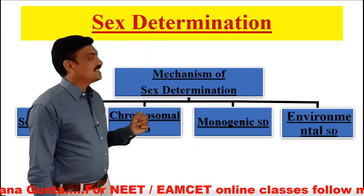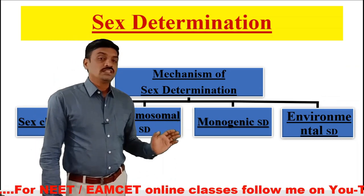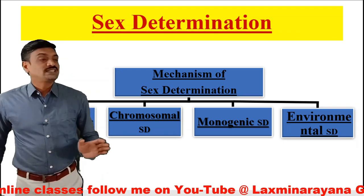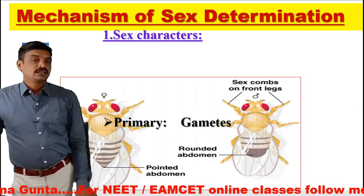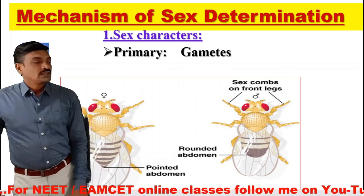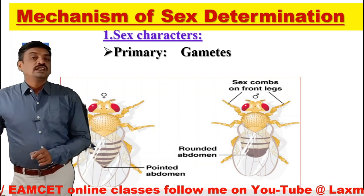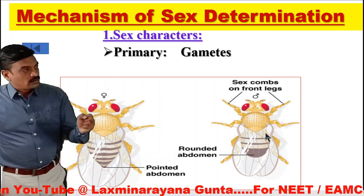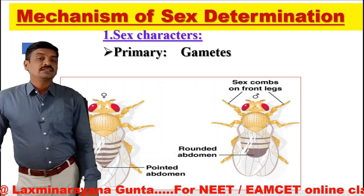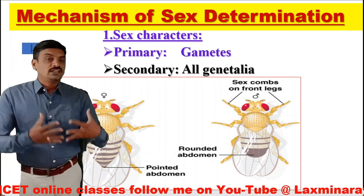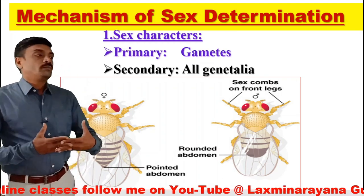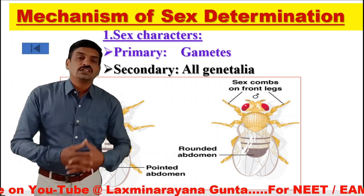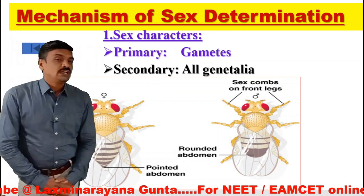How is sex determined? What is the mechanism? The mechanism of sex determination is of four types. The first one is sex characters. Sex is determined by sex characters. The primary sex characters include gametes — if an individual releases female gametes, it is called a female; if it releases male gametes, it is considered male. If an individual has all male genitalia, it is considered male; if it has female genitalia, it is called female.